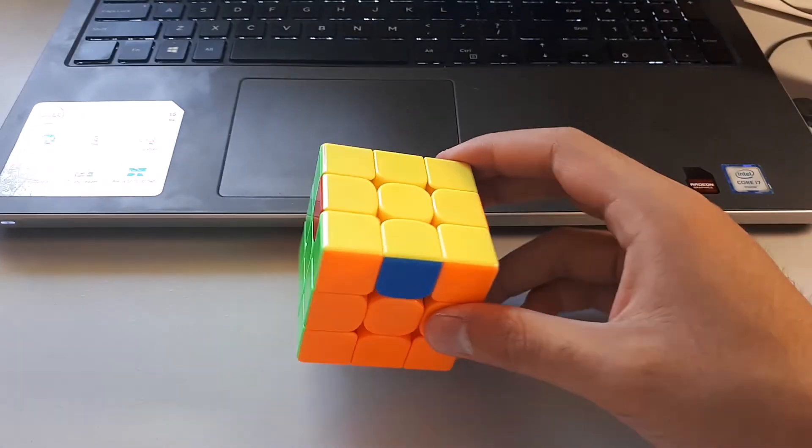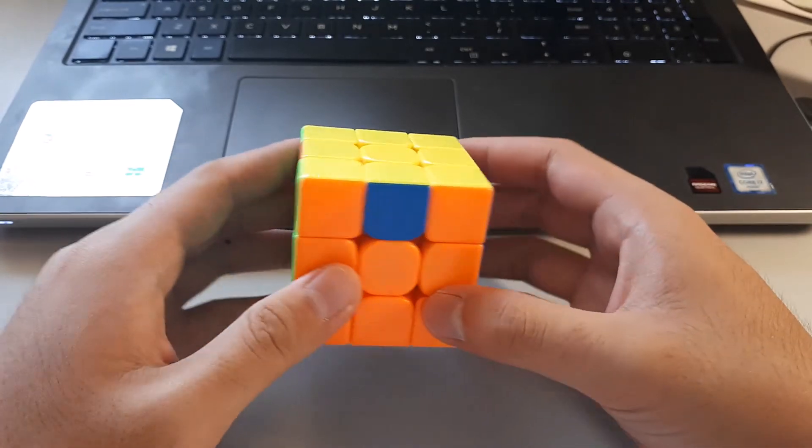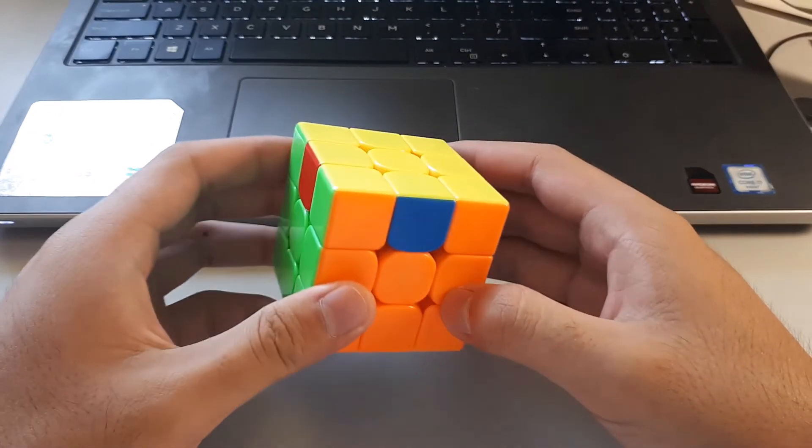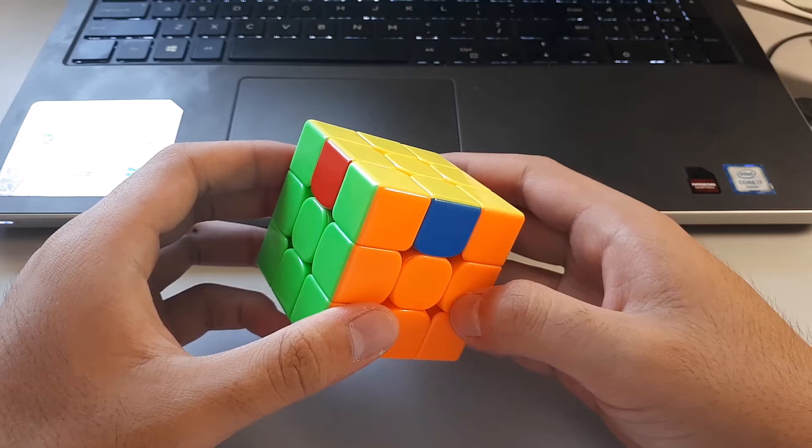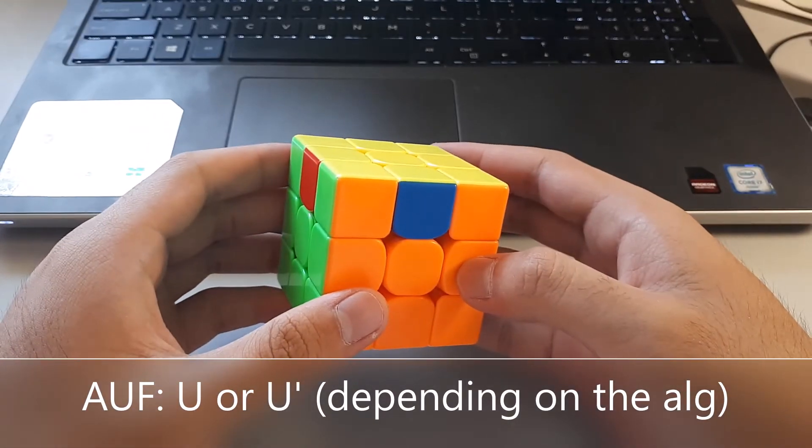For the second algorithm that I've shown, the one that starts off with an M prime U prime, the AUF is slightly harder to tell. From the algorithm, the AUF is a U move, but to recognize it is slightly more difficult.